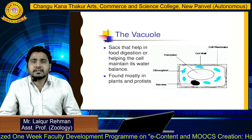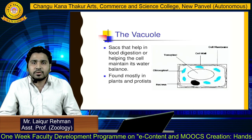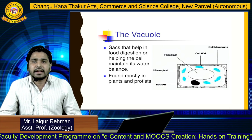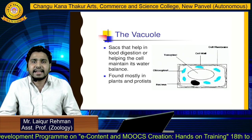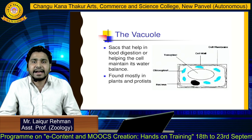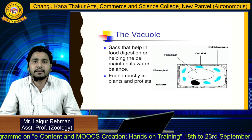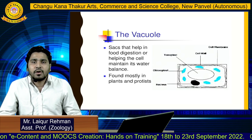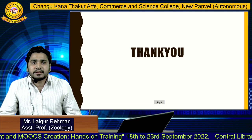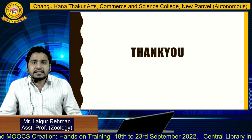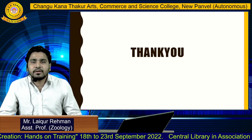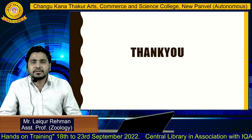The vacuole — by the name itself you can identify it as a sac. It helps in food digestion and helps the cell maintain its water balance. It is found mostly in plants and protists. That concludes today's lecture — thank you so much, students.